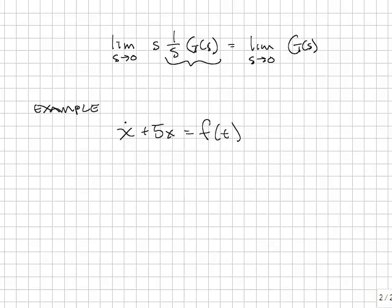x_dot plus 5x is equal to some forcing function, where the forcing function is the unit step. Using the differential form, we want to know what happens as time goes to infinity. Well, x_dot goes to 0 plus 5x. The unit step is 1 as time goes to infinity. Therefore, x will have a final value of 1 fifth.